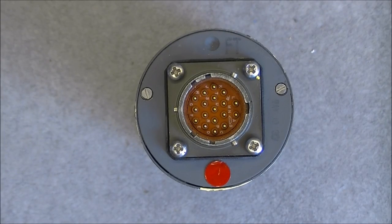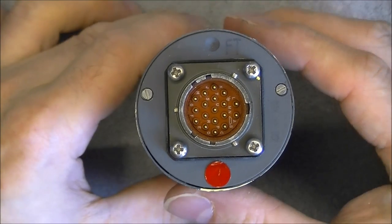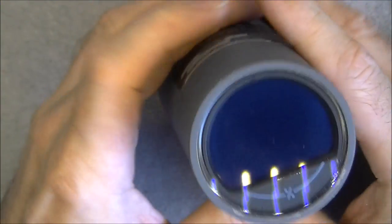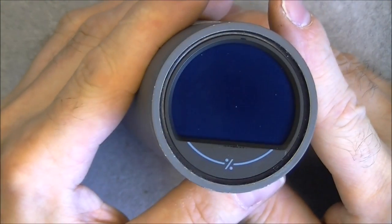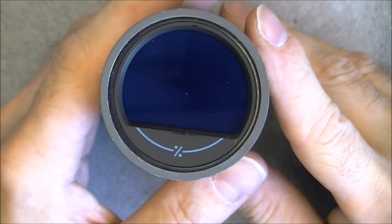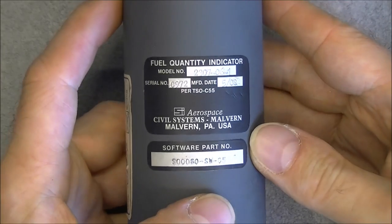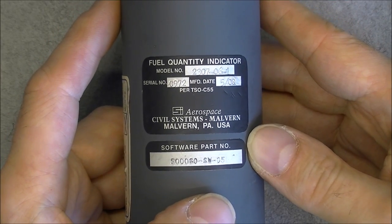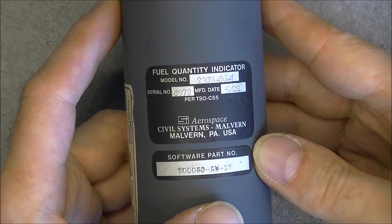Hi, for today's teardown, an aircraft instrument. This one is a fancy digital instrument with a liquid crystal display it seems. It is a fuel quantity indicator made by the Smiths Industries Aerospace Civil Systems.